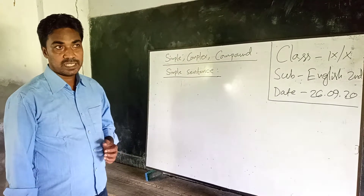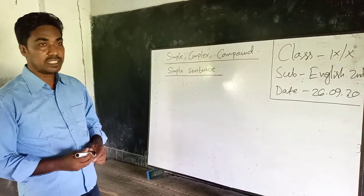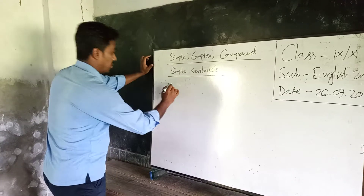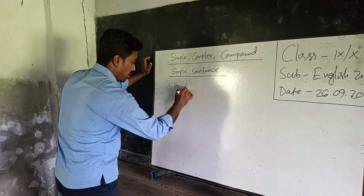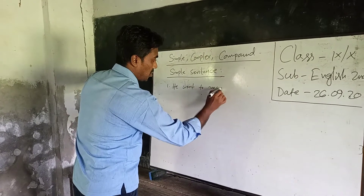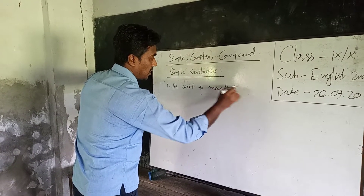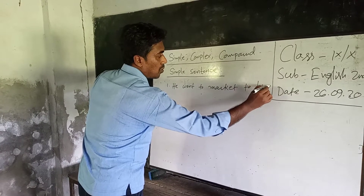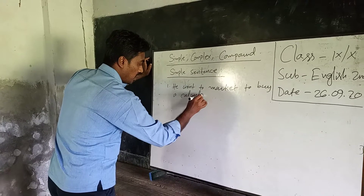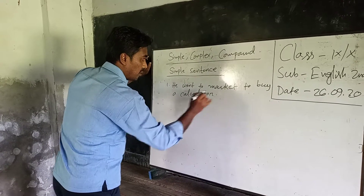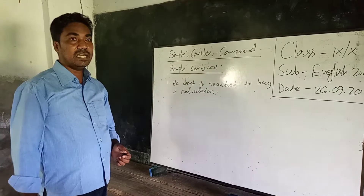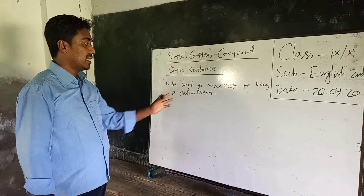For example, this is a simple sentence: 'He went to market to buy a calculator.'